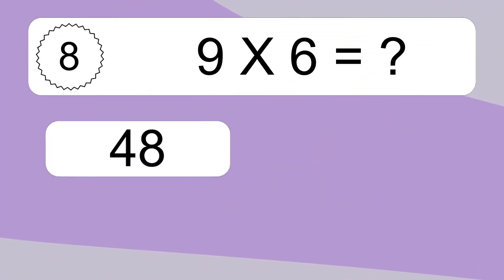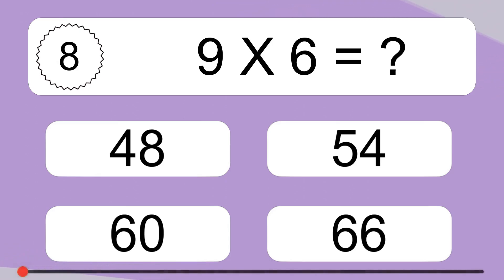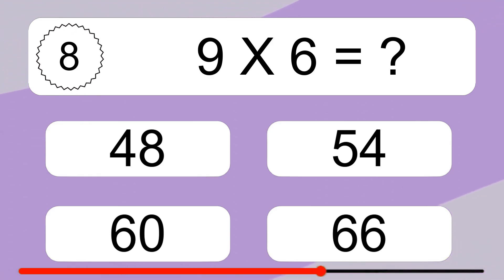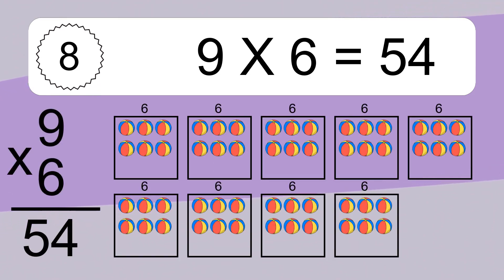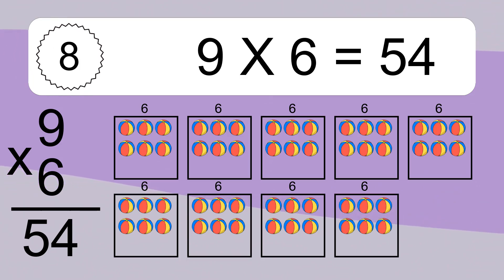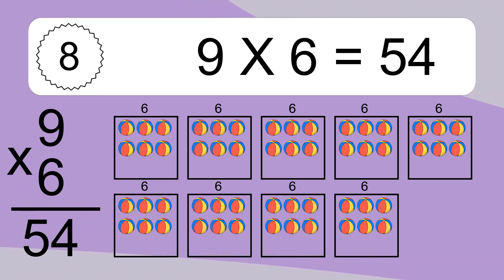Nine times six equals what? Nine times six equals fifty-four. We have nine boxes, and each box has six colorful balls inside. If you count all the balls in all the boxes together, you will have nine times six balls. This equals fifty-four balls.